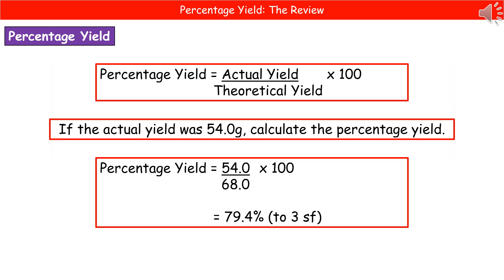Once we've calculated the theoretical yield, they could very well ask us to go on to calculate the percentage yield. In order to do that, they've got to give you one more piece of information, which is the actual yield obtained. So that will be stated in the question somewhere. In this case, I've given you the actual yield being 54.0 grams, and then we need to calculate the percentage yield. So we do our actual 54 divided by the theoretical, which was 68, and then we multiply that answer by 100 to give us the percentage. And we end up with a percentage yield of 79.4% to three significant figures.